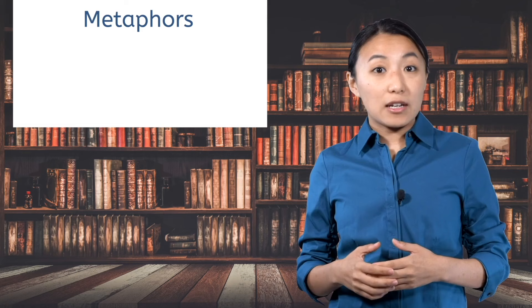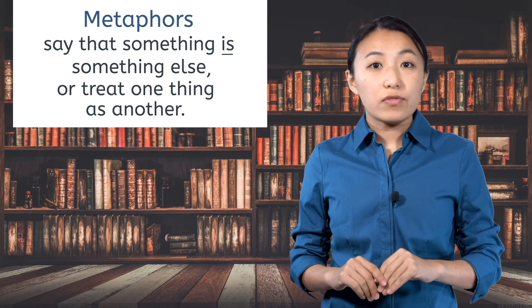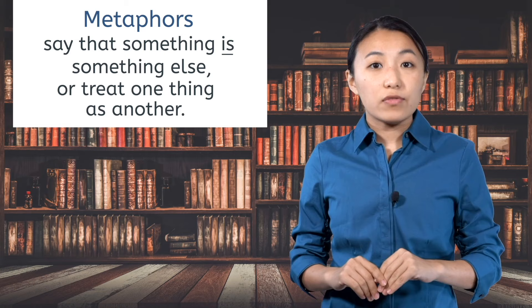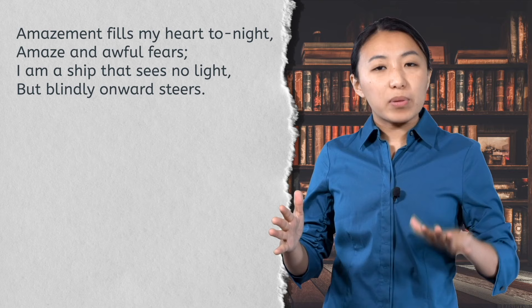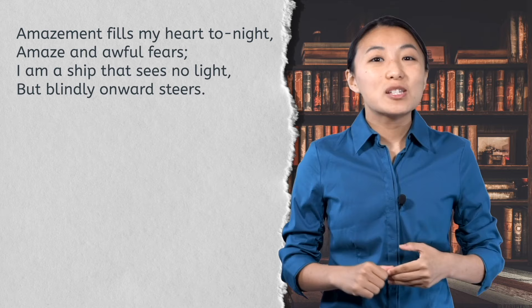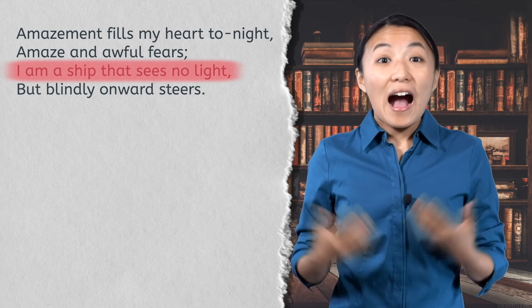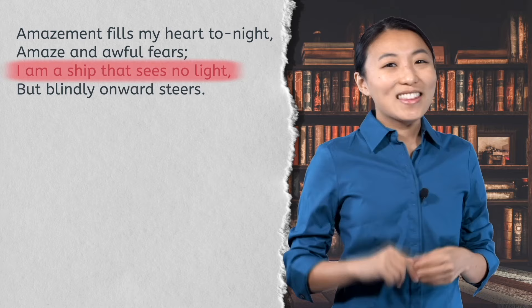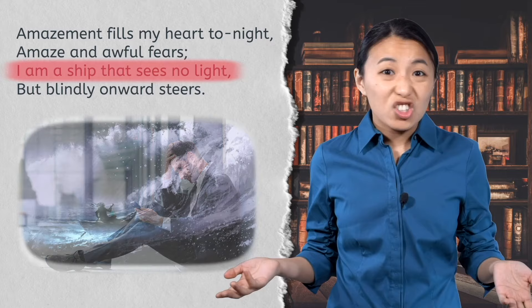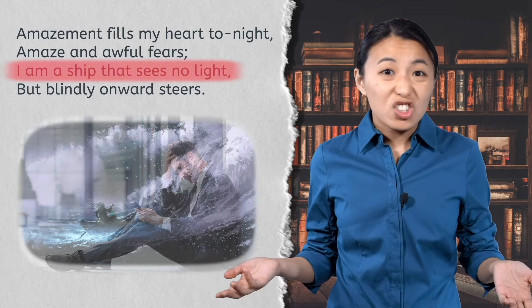Metaphors also find similarities between two things, but a metaphor doesn't use the words 'like' or 'as.' Metaphors say that something is something else or treat one thing as another. Let's read part of 'Thanksgiving' by Robert Nichols. 'Amazement fills my heart tonight, amaze and awful fears. I am a ship that sees no light, but blindly onward steers.' The speaker of the poem says 'I am a ship that sees no light.' The metaphor tells us that the speaker doesn't know where they are going or what they are doing, just like a ship with no light to guide it.